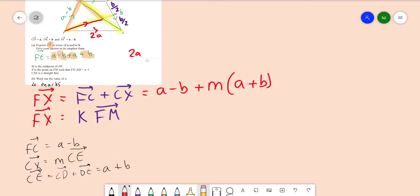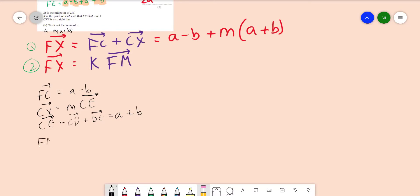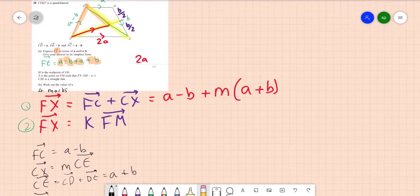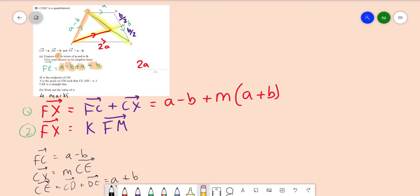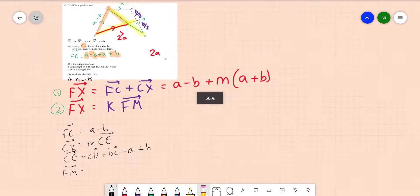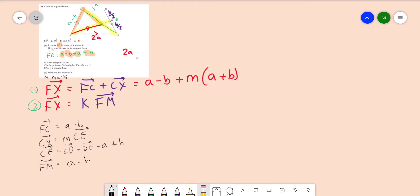Now similarly, for our second one, so that was our first method, and our second method of going from f to x, is it needs fm. So let's find fm. fm is going to be fc, cd, and then half of de. So it's going to be, let's look at it, a minus b, which is fc, plus a, and then plus b over 2, which is dm. And if I simplify this, because I've got a's and I've got b's, I can really write fm as 2a minus 0.5b, because I've got minus 1b and a half b. So now I have all the pieces. So I can really call this sum amount k of fm, which is 2a minus 0.5b.